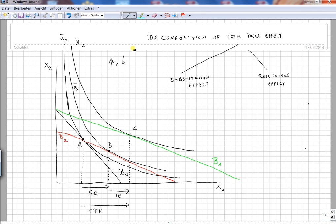Now we can decompose the total price effect into first the substitution effect and second the real income effect. If the first price goes down, the price will go down absolutely and relatively, whereas the price of the second good does not change at all. So absolutely it doesn't change, but relatively it goes up because the price of the first good goes down.